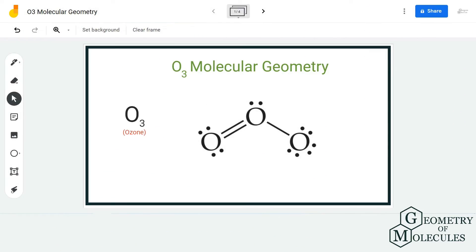Hi guys, welcome back to our channel. In today's video we are going to help you determine the molecular geometry of O3 molecule. It's the chemical formula for ozone, and for determining its molecular geometry we are first going to look at its Lewis structure.